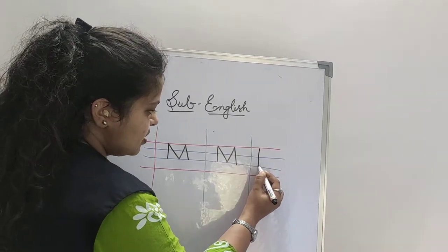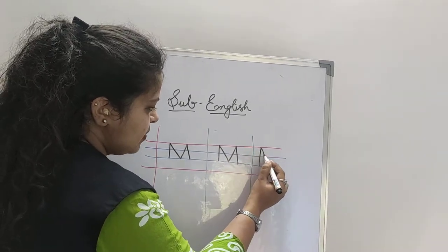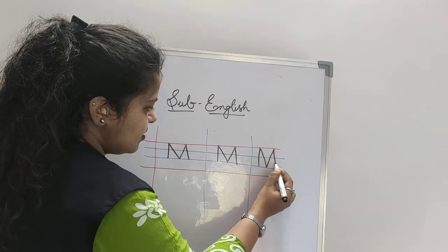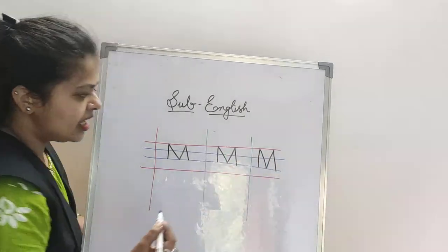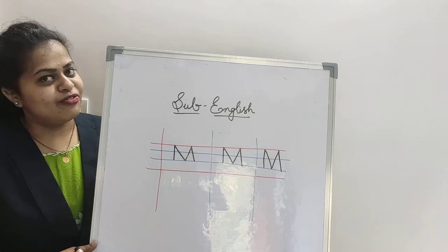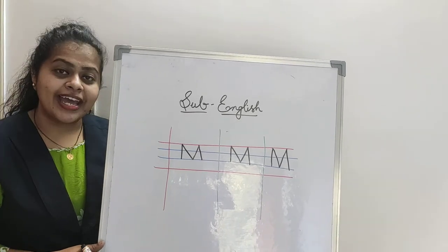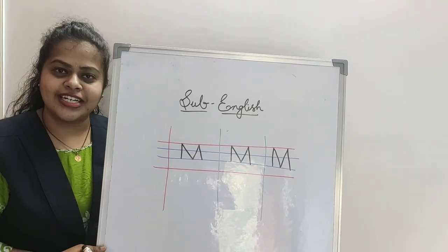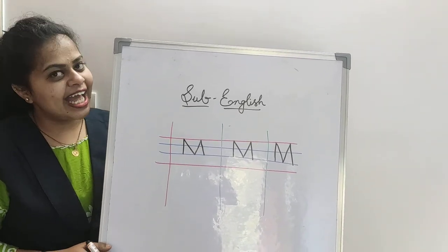So, this is how we need to write the letter M. M sounds 'mmm'. M for man. I hope you people have understood. Thank you.